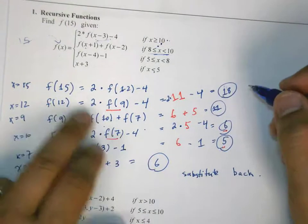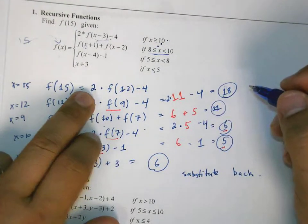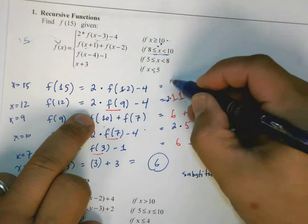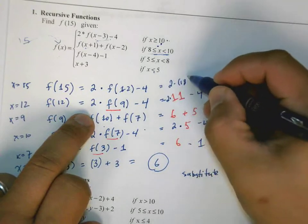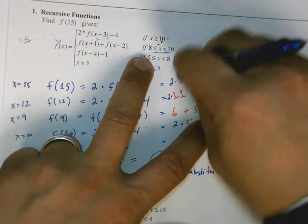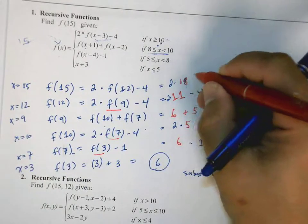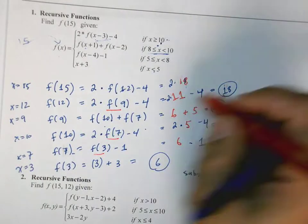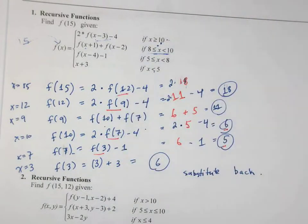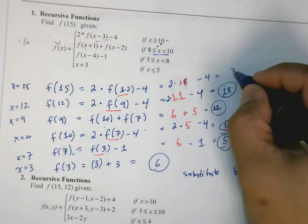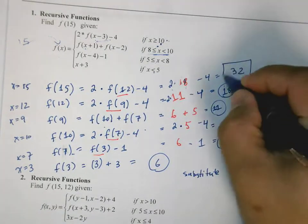So now, back up here, this is 2 times 18. 2 times 18. Because that's what f of 12 really is. Minus 4. So that's 36 minus 4, or 32. And that is our final answer.